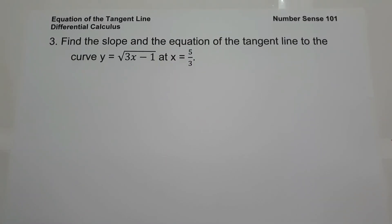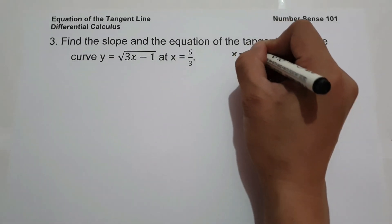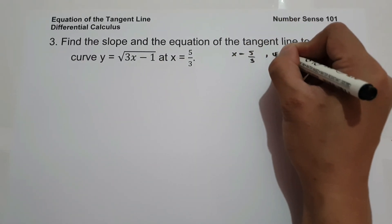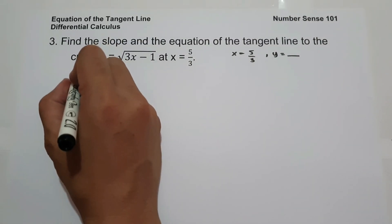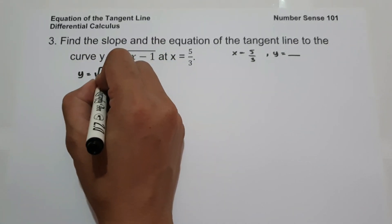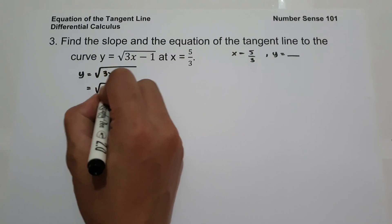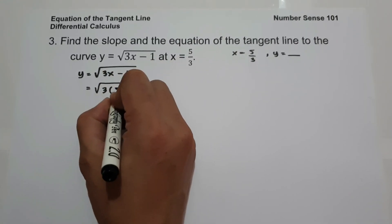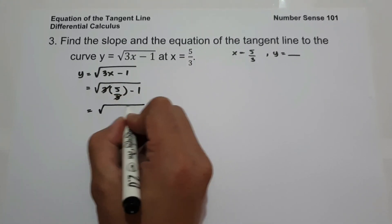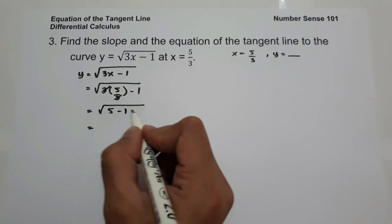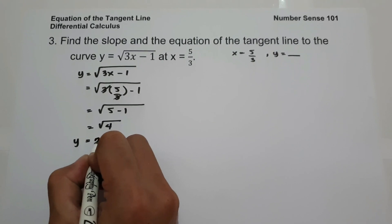Number 3: find the slope and the equation of the tangent line to the curve y equals square root of 3x minus 1 at x equals 5 over 3. With x = 5/3, let us find y by substituting: y equals square root of 3 times (5/3) minus 1. Cancelling 3 gives square root of 5 minus 1, which is square root of 4, and the square root of 4 is 2. So y equals 2.